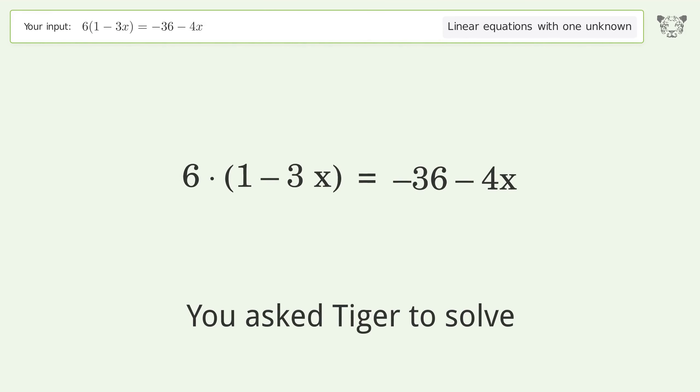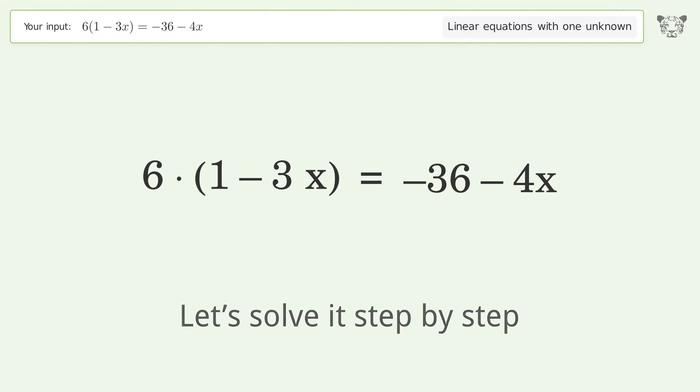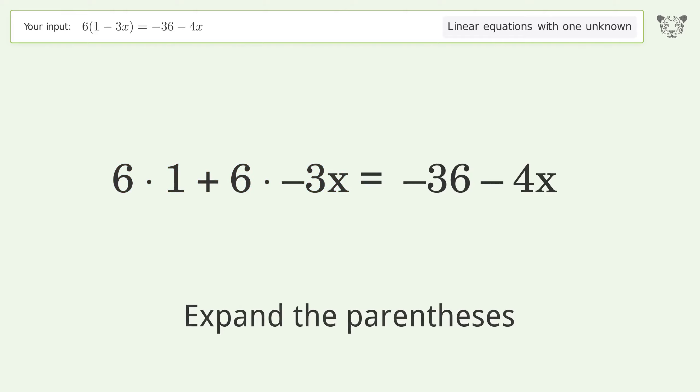You asked Tiger to solve this problem which deals with linear equations with one unknown. The final result is x equals 3. Let's solve it step by step. Simplify the expression, expand the parentheses, simplify the arithmetic, multiply the coefficients.